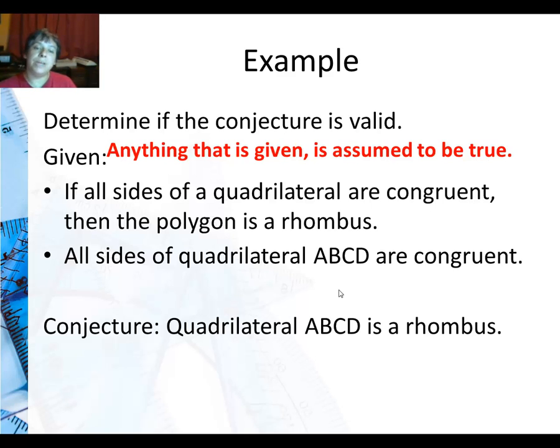The conjecture or the conclusion is that quadrilateral ABCD is a rhombus. Is this a valid argument? Well we're given the statement and here's the statement that's true and I'm identifying the hypothesis. All sides of a quadrilateral are congruent. There's a conclusion. The polygon is a rhombus.